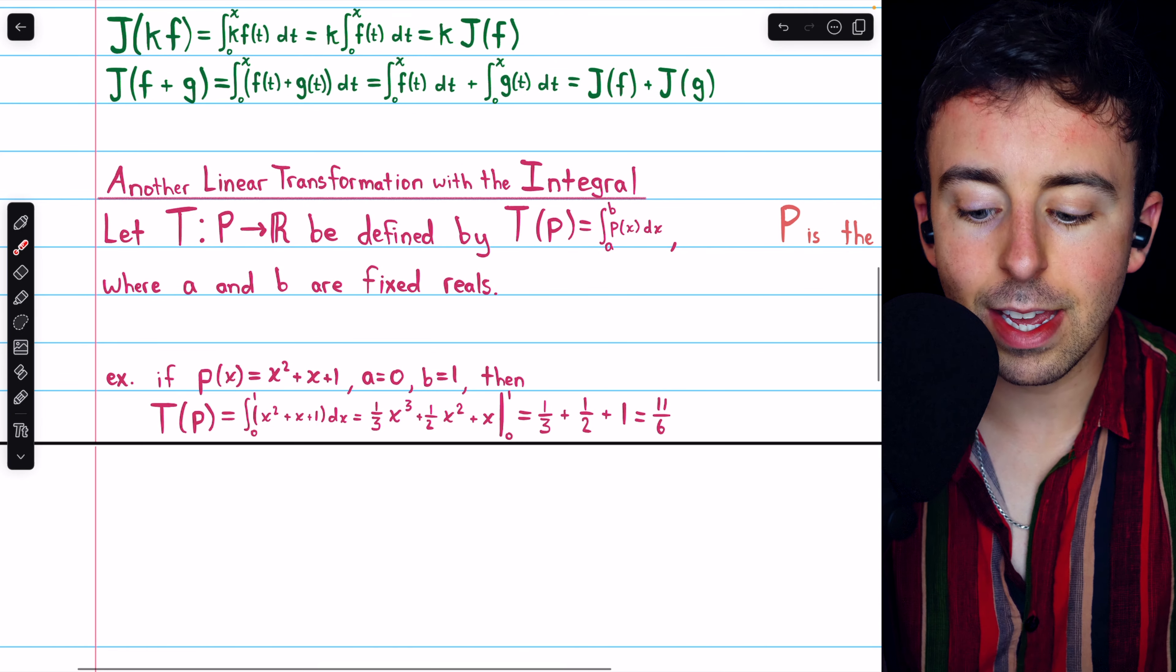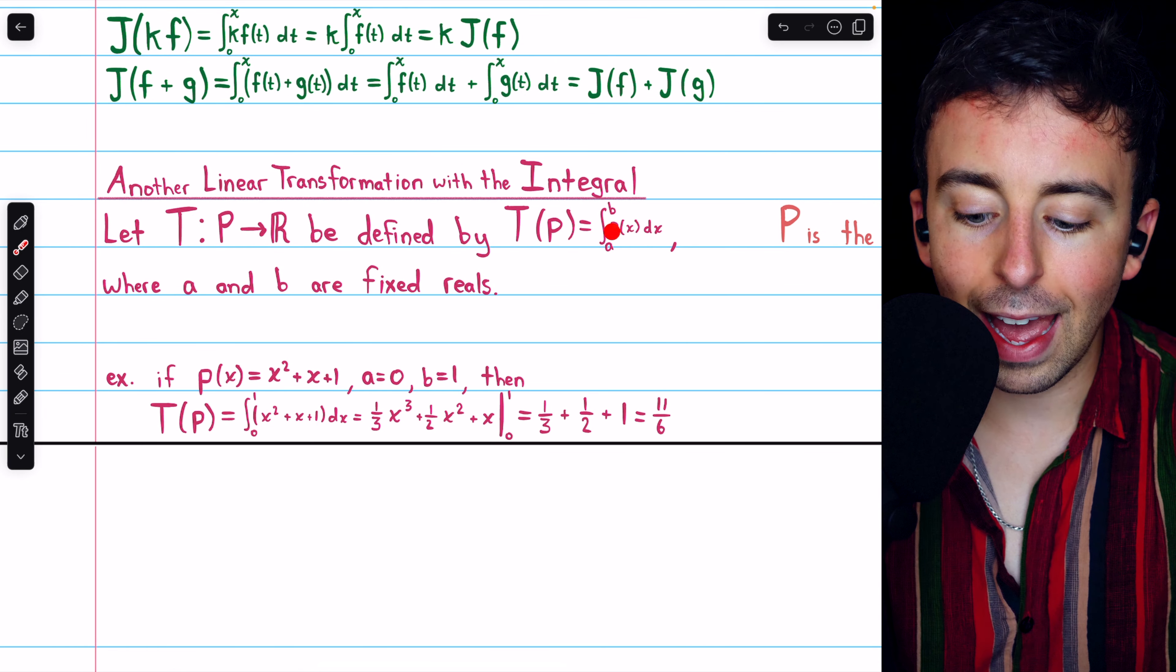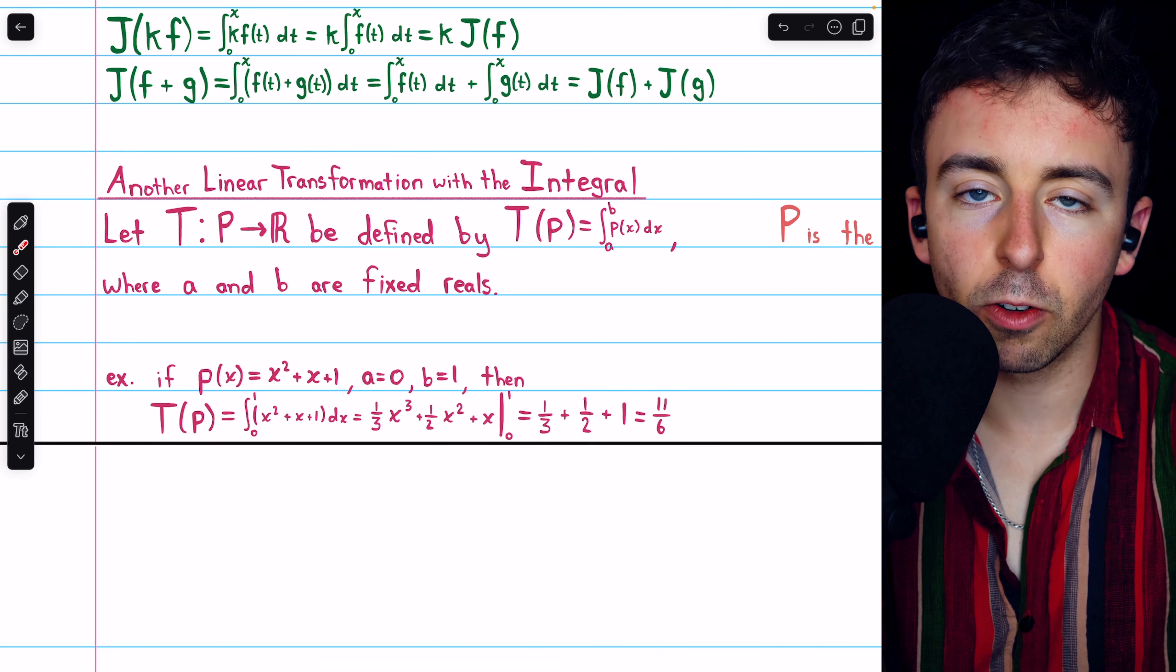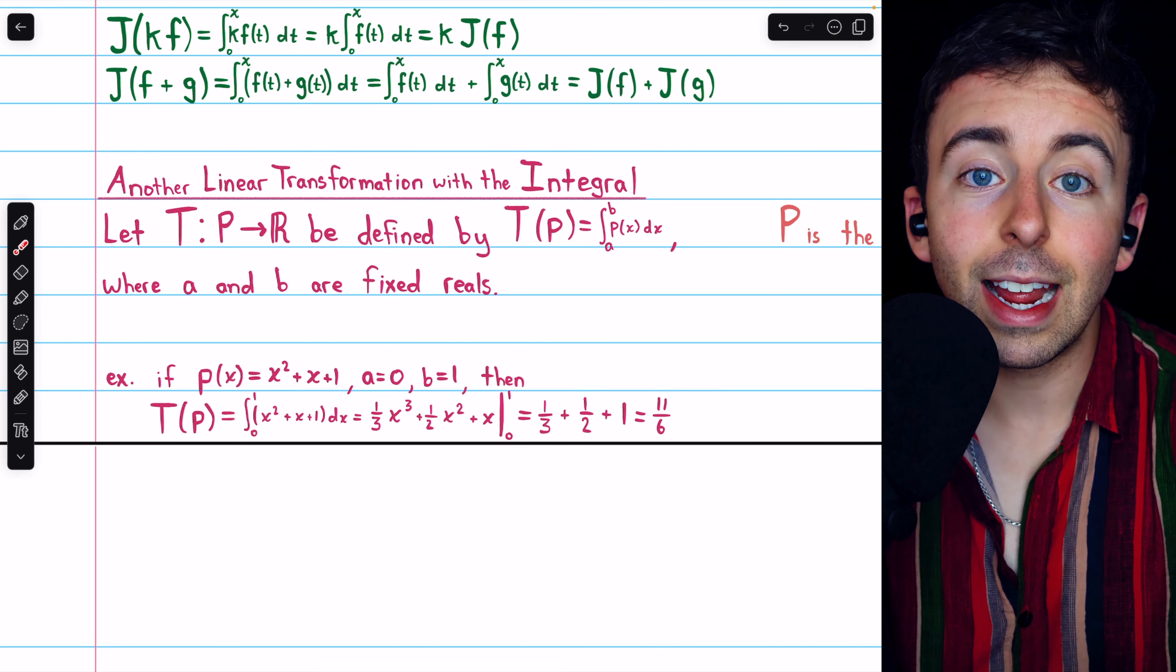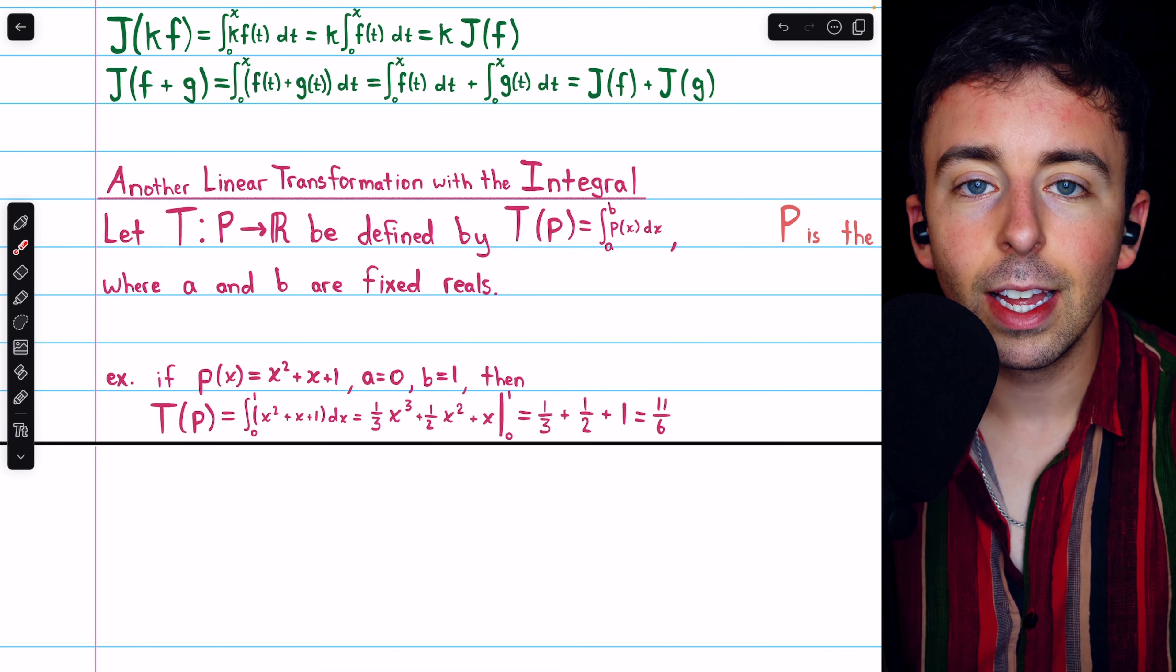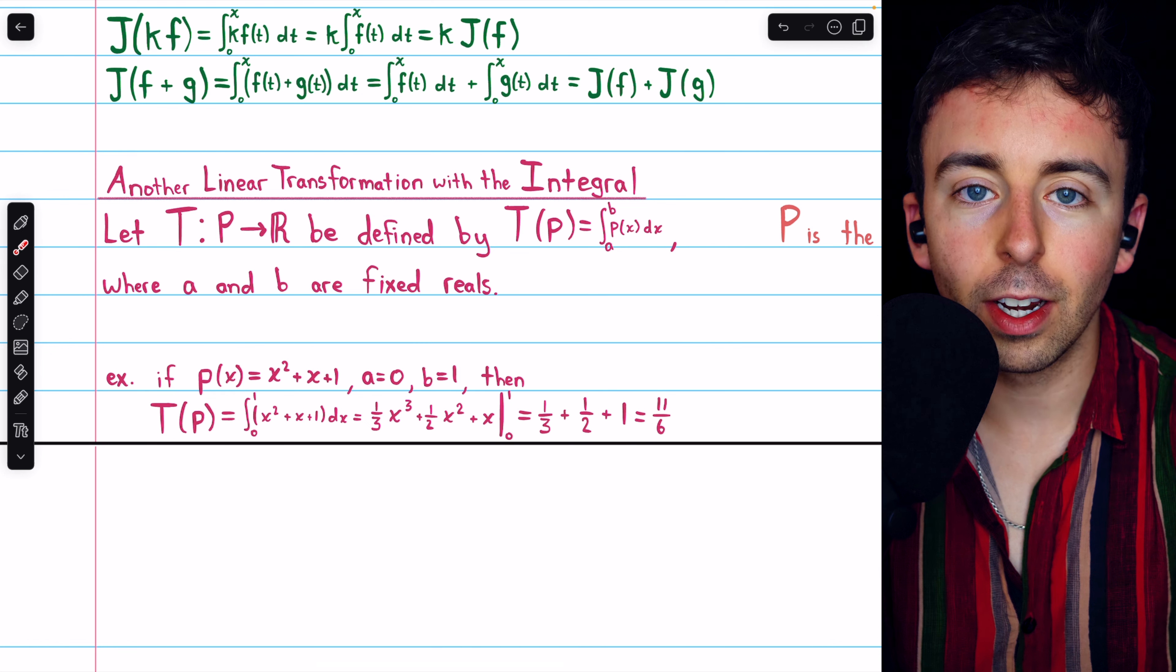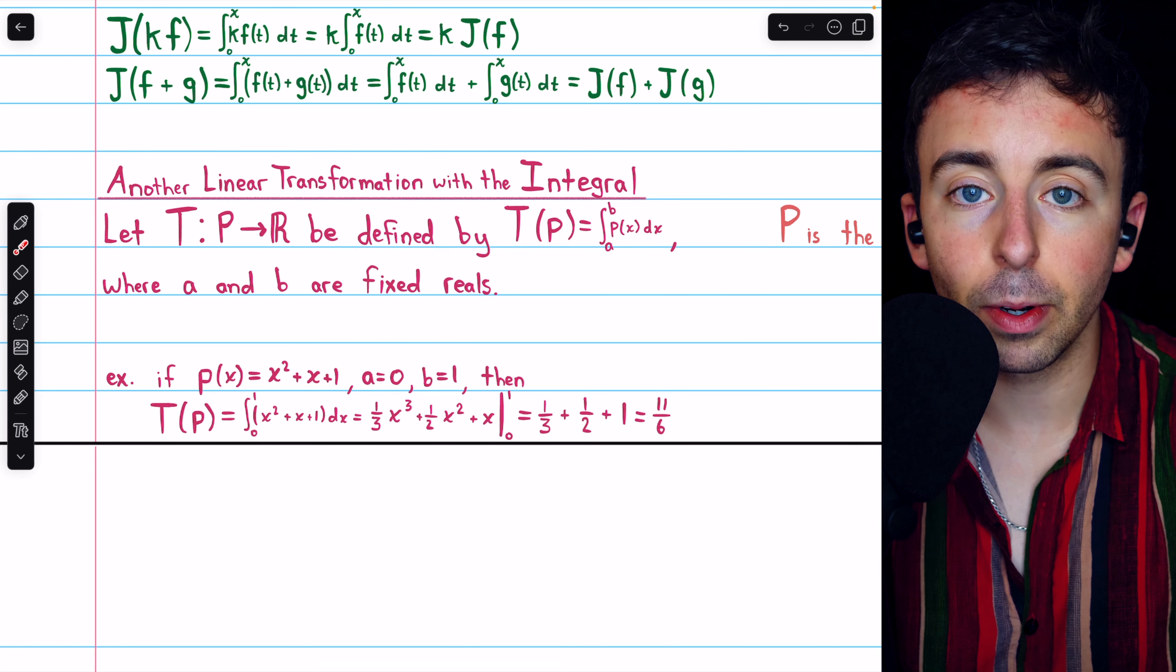T of p is the integral of that input polynomial from a to b, where a and b are just fixed real numbers. So this transformation takes a polynomial as an input and as an output gives the area under that function between two fixed numbers.